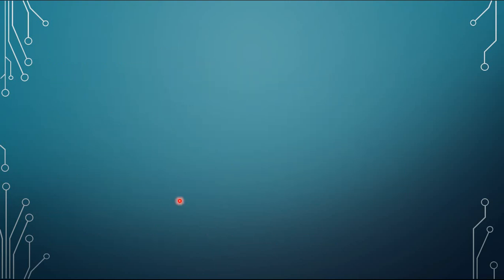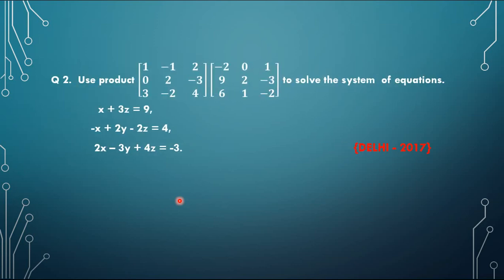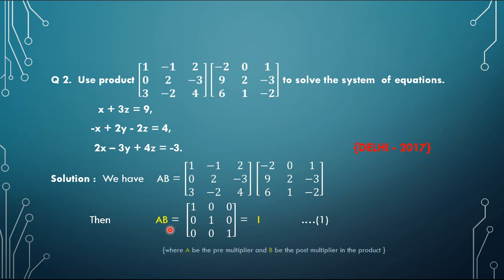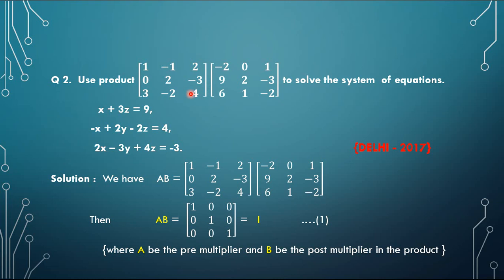This question was very, very important from an exam point of view. Now we move to another important question — this question already appeared in the Delhi 2017 exam. The question says: use the product of these two matrices to solve the system of equations. This is very similar to the previous one. First, let us find the product. Let A be the pre-multiplier matrix and B be the post-multiplier matrix. We compute the product AB and get the identity matrix.